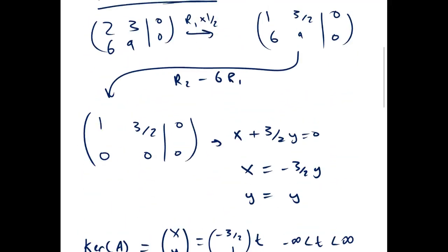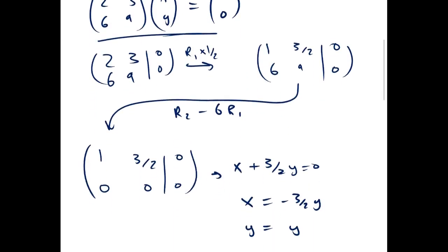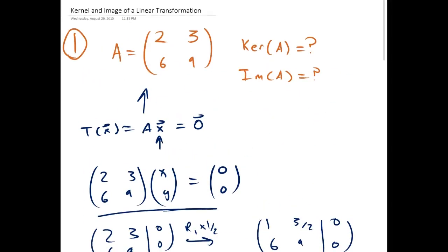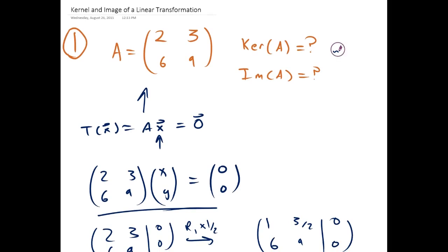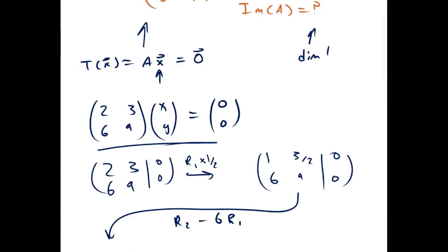By the rank-nullity theorem — if you haven't watched that video yet, that's okay — we know that since the dimension of the kernel is 1 and the dimension of the target space is 2, because we have a 2 by 2 matrix, the image should also have dimension 1. Let's go ahead and find the image.